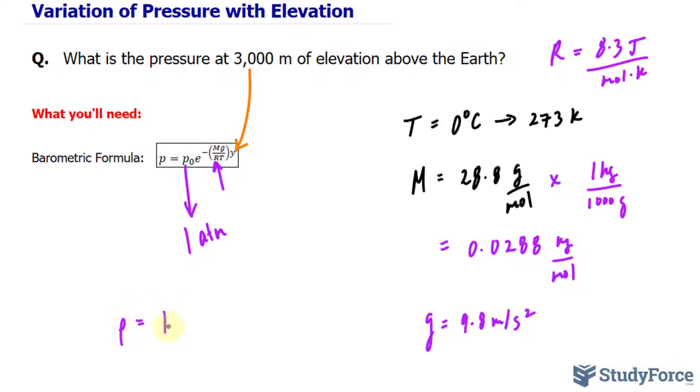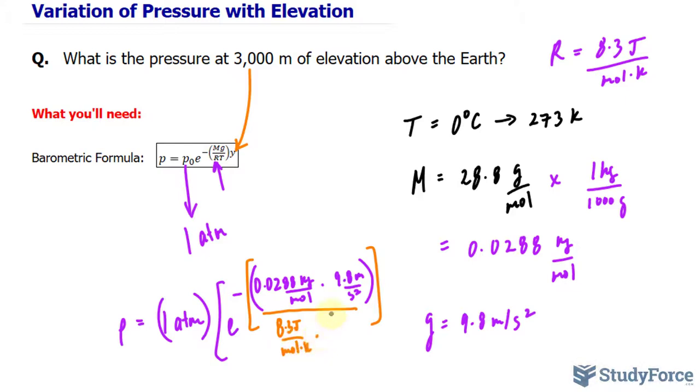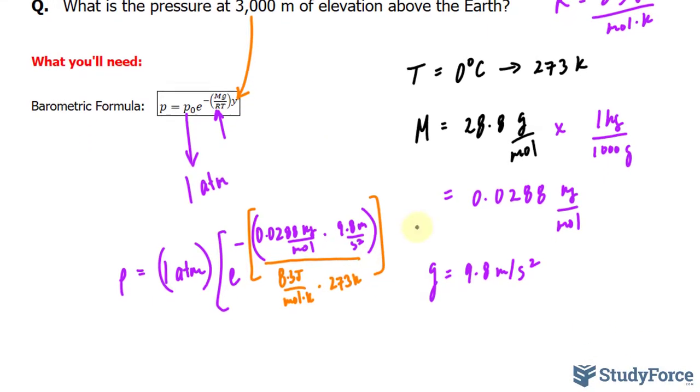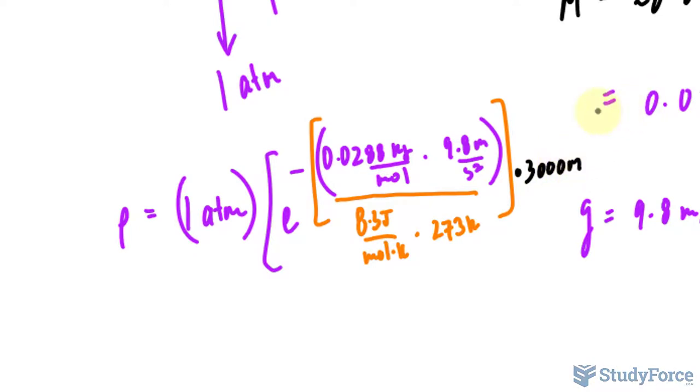Now we can plug in all these values. So we have 1 atm multiplied to e to the power of M being 0.0288 kilograms per mole. That gets multiplied to 9.8 meters per second squared. And then we divide this, remember this is all within the exponent, by R being 8.3 joules per mole times Kelvin. And the temperature is 273 Kelvin. And before I show you how these units cancel out, I'll multiply this by 3,000 meters, which is the elevation.